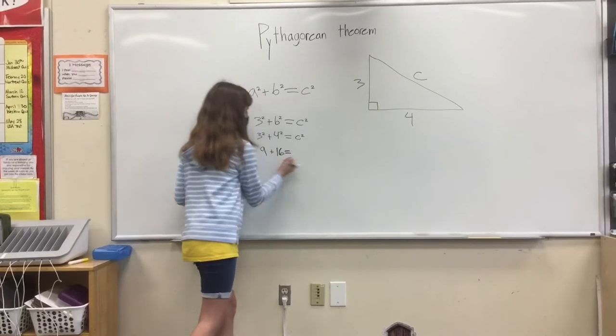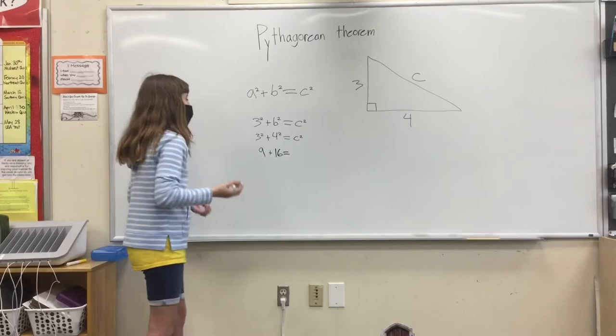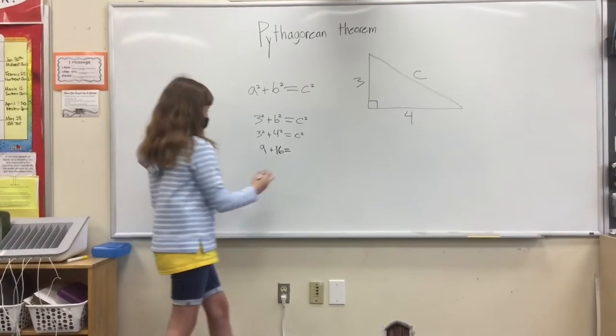Then 9 plus 16 must equal c squared. 9 plus 16 is 25.